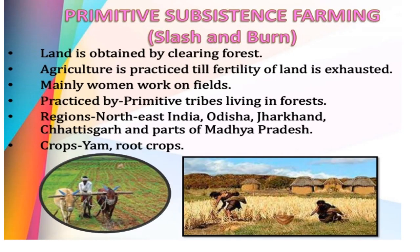Primitive subsistence farming is also called slash and burn farming, in which land is obtained by clearing forest. Agriculture is practiced till the fertility of the land is exhausted. It is practiced by primitive tribes living in India — in northeast India, Odisha, Jharkhand, Chhattisgarh, and parts of Madhya Pradesh. The main crops grown are yam and root crops.